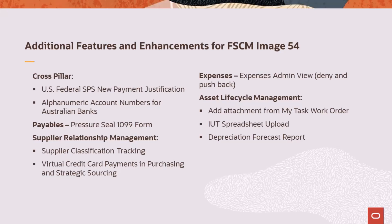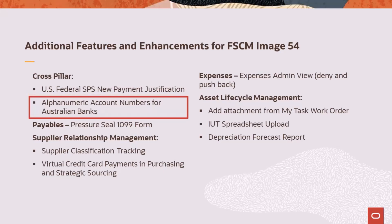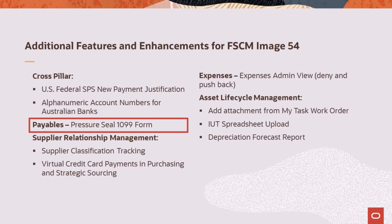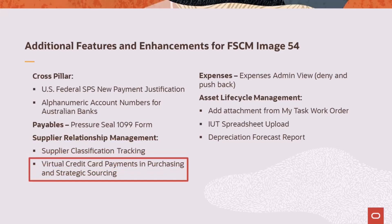This list provides additional features and enhancements added for FSCM Update Image 54. A new Payment Justification field is available for Accounts Payable Vouchers, which is available for all voucher styles regardless of the payment type and EFT layout. Australian banks can now create alphanumeric account numbers. Payables has the option to utilize Pressure Seal 1099 forms. Supplier Relationship Management enhances supplier classification tracking by adopting the PeopleTools Excel to Component Interface Utility, which allows you to upload and maintain classification information using an Excel file. Purchasing and strategic sourcing now support virtual credit cards for supplier payments, which includes voucher denial comments and email notifications.